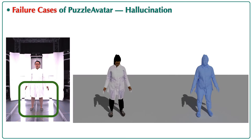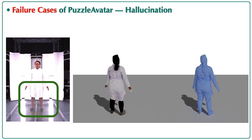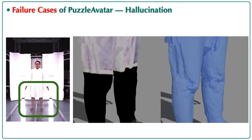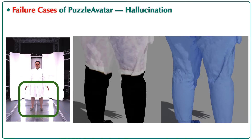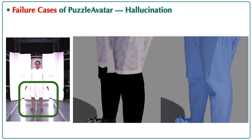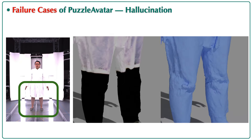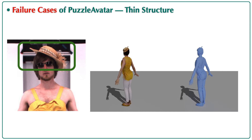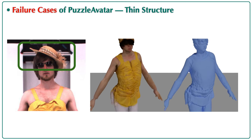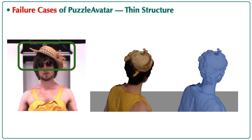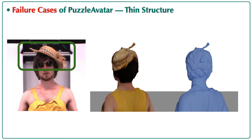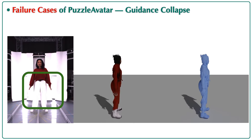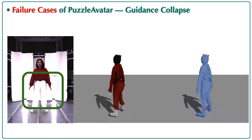Here we show another example of hallucination: in the reconstruction result, black pants appear under the white coat. Although realistic, it differs from the original input that includes no pants. Since Puzzle Avatar relies on DMTET as its 3D representation, it may struggle to accurately model thin structures such as hat brims. The common issue of guidance collapse in large vision-language models can also incorrectly mix up the colors of clothes and pants.